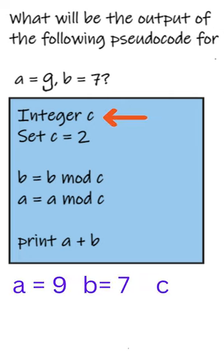In the first line we have to declare a variable c of type integer. In the second line we have to set the value of c to 2. So now c contains 2.